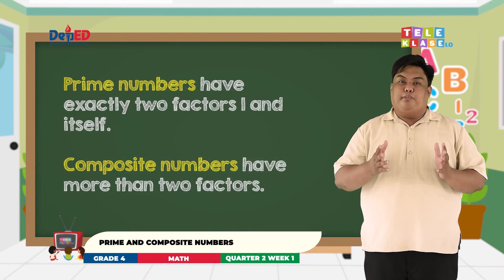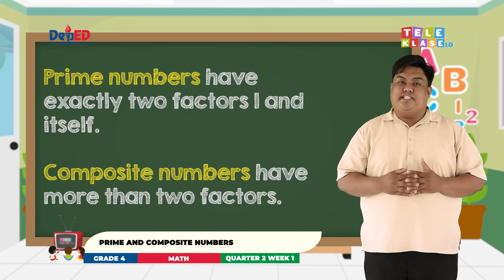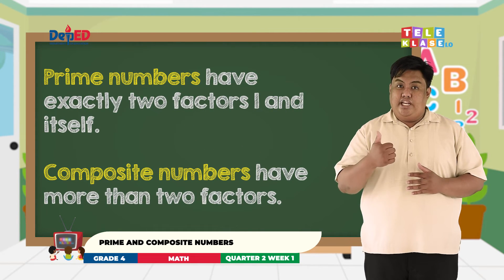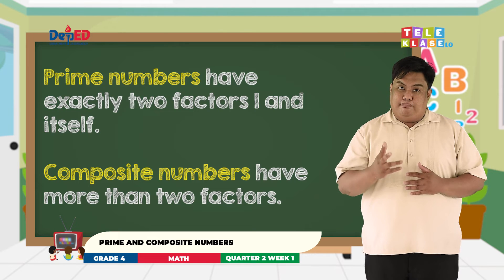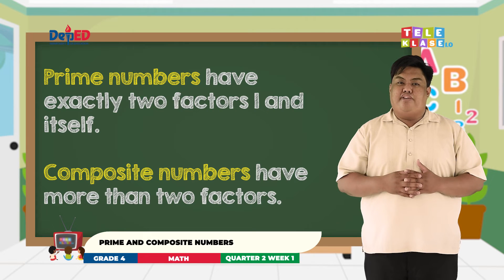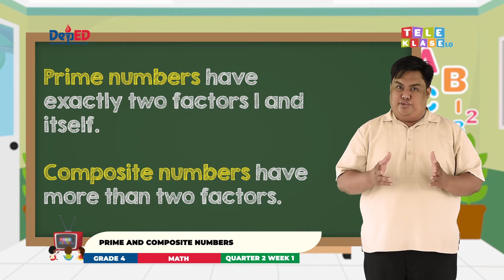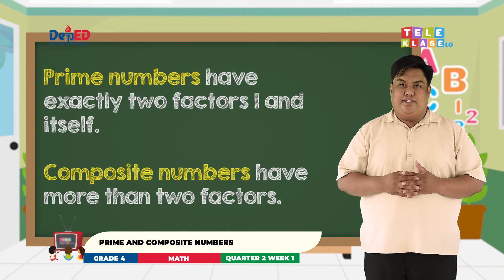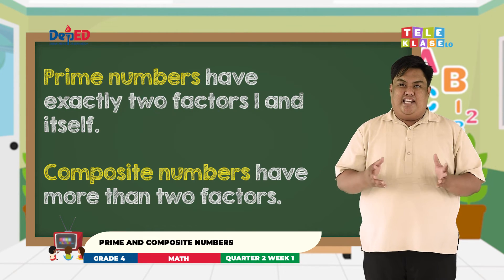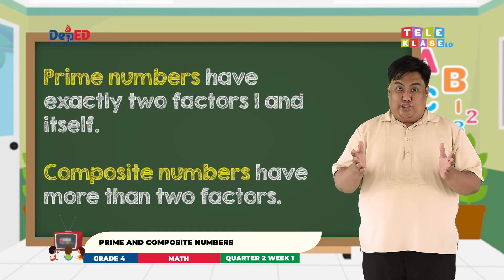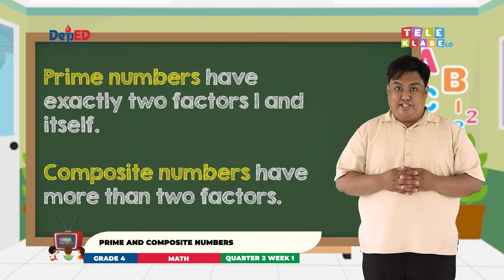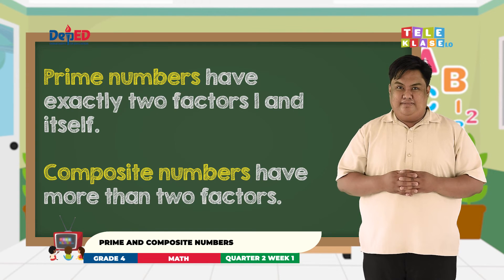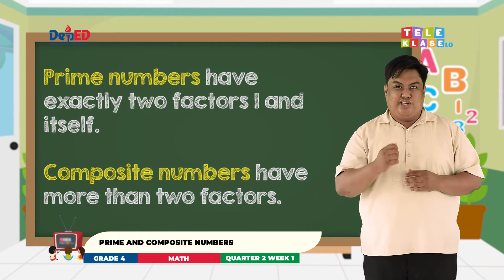Again, prime numbers have exactly two factors: one and itself, while composite numbers have more than two factors. So guys, did you understand our lesson for today? Let's check!